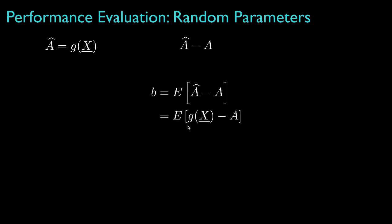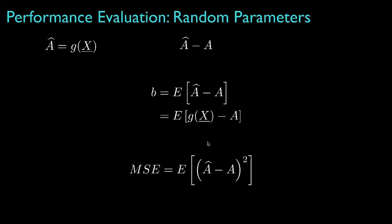It's sometimes useful to write the estimator as an explicit function of the observation to show both of the random quantities, and the mean square error is the expected value of the square of this error. We will sometimes replace a-hat by the function of the observation to show its dependence on the random observation.